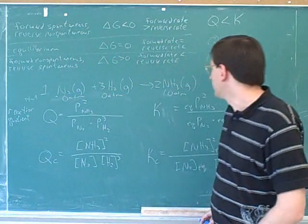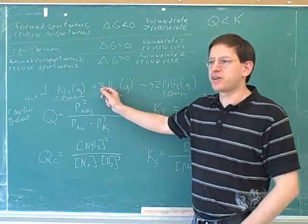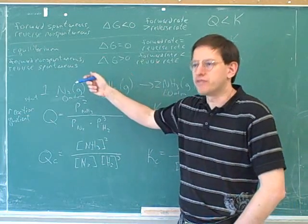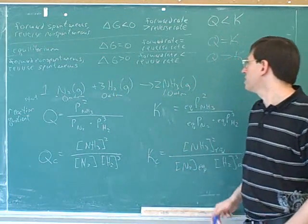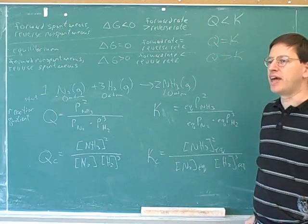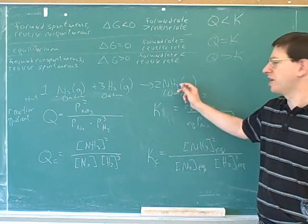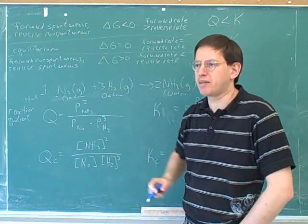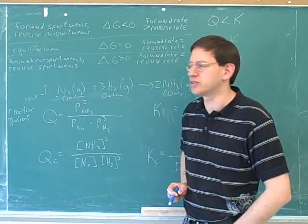Suppose that when you started, you had a lot of the product and only a little of the starting materials. Well, then the reaction would immediately start moving into reverse. So there's nothing weird about having a Q that's bigger than K. That just happens when you start with too much of the right-hand materials and too little of the left-hand materials. So then we move into reverse to get back to what the ultimate destination is supposed to be.